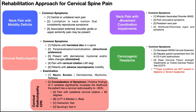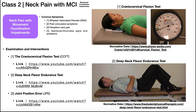When we look at class two — neck pain with movement coordination impairments — we're thinking about a different type of mechanism. Understand that this is a common mechanism, but not the only one: some kind of trauma to the head and neck.